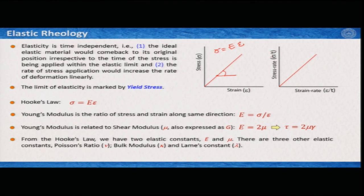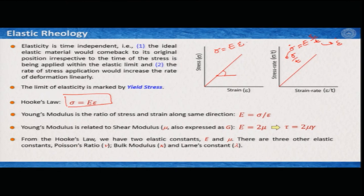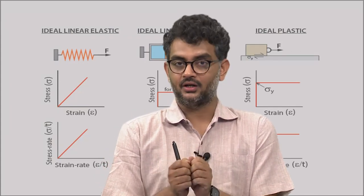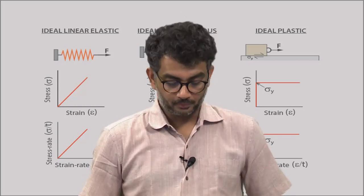If I increase the stress rate — that means increase the loading rate — then strain rate would also increase linearly. We can write sigma-dot equal to Young's modulus times epsilon-dot. This is again Hooke's law. Young's modulus is therefore the ratio of stress to strain along the same direction — that is important. You cannot measure stress in one direction and strain in another direction and call the ratio your Young's modulus; you have to measure them along the same direction.